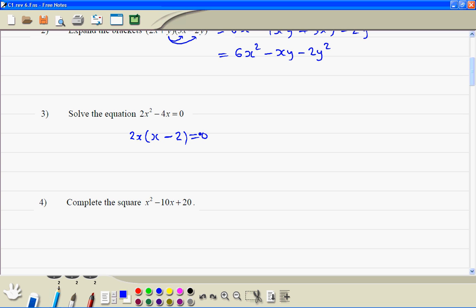And is equal to 0. Now this means 2x is equal to 0, or this bracket here, x minus 2, is equal to 0.